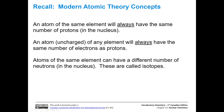Atoms of the same element are always going to have the same number of protons in the nucleus. If the atom is uncharged — so it doesn't have an overall charge of plus one, minus one, or anything like that — then the number of electrons is going to be equal to the number of protons. And atoms of the same element can have a different number of neutrons in the nucleus. These atoms with the same number of protons but different numbers of neutrons — we call those isotopes.